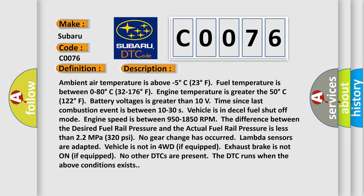Ambient air temperature is above minus 5 degrees Celsius (23°F). Fuel temperature is between 0 to 80 degrees Celsius (32 to 176°F). Engine temperature is greater than 50 degrees Celsius (122°F). Battery voltage is greater than 10 volts. Time since last combustion event is between 10 to 30 seconds. Vehicle is in diesel fuel shutoff mode. Engine speed is between 950–1850 RPM. The difference between the desired fuel rail pressure and the actual fuel rail pressure is less than 22 MPa (320 PSI). No gear change has occurred. Lambda sensors adapted. Vehicle is not in 4WD if equipped. Exhaust brake is not on if equipped. No other DTCs are present. The DTC runs when the above conditions exist.